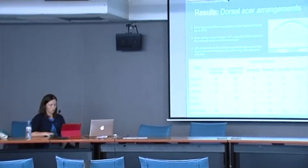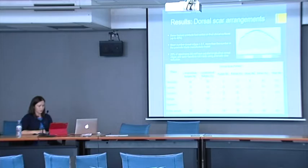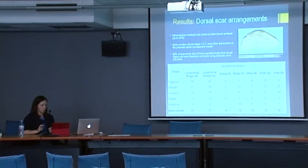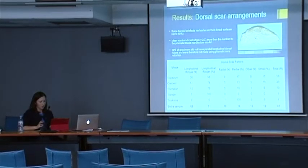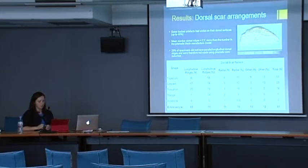As far as dorsal scar arrangement goes, four backed artefacts had cortex on their dorsal surfaces, and two had up to 45% of their dorsal surfaces covered in cortex. The number of dorsal ridges ranged from zero to eight; the most common was two, but the average was closer to three. Nearly one third of specimens did not have parallel longitudinal dorsal ridges and were therefore not made using prismatic core reduction. The category of 'other dorsal surfaces' mostly includes those with bidirectional perpendicular scars.